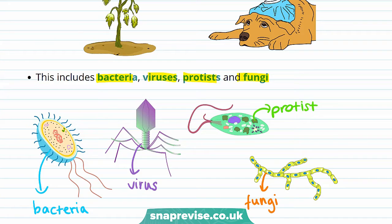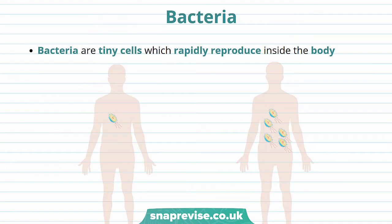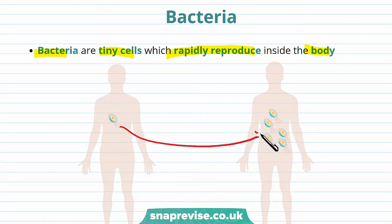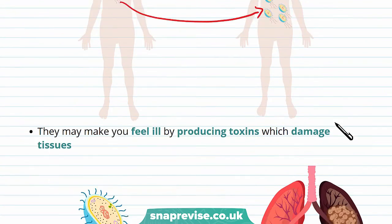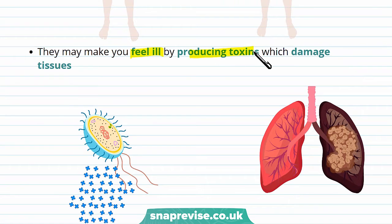I'll be going through how each of these cause disease in this video. The first organisms we're going to be talking about are bacteria. Bacteria are tiny cells which rapidly reproduce inside the body, meaning they make many more copies of themselves. It's important to remember that not all bacteria in the body are harmful.